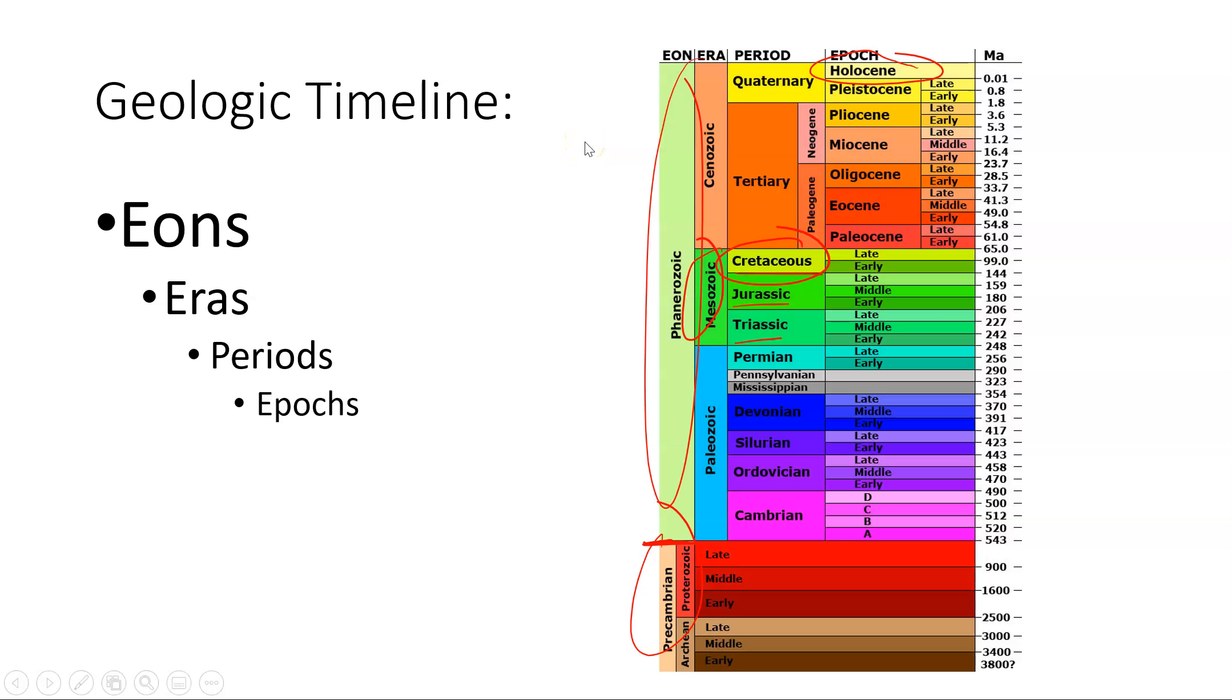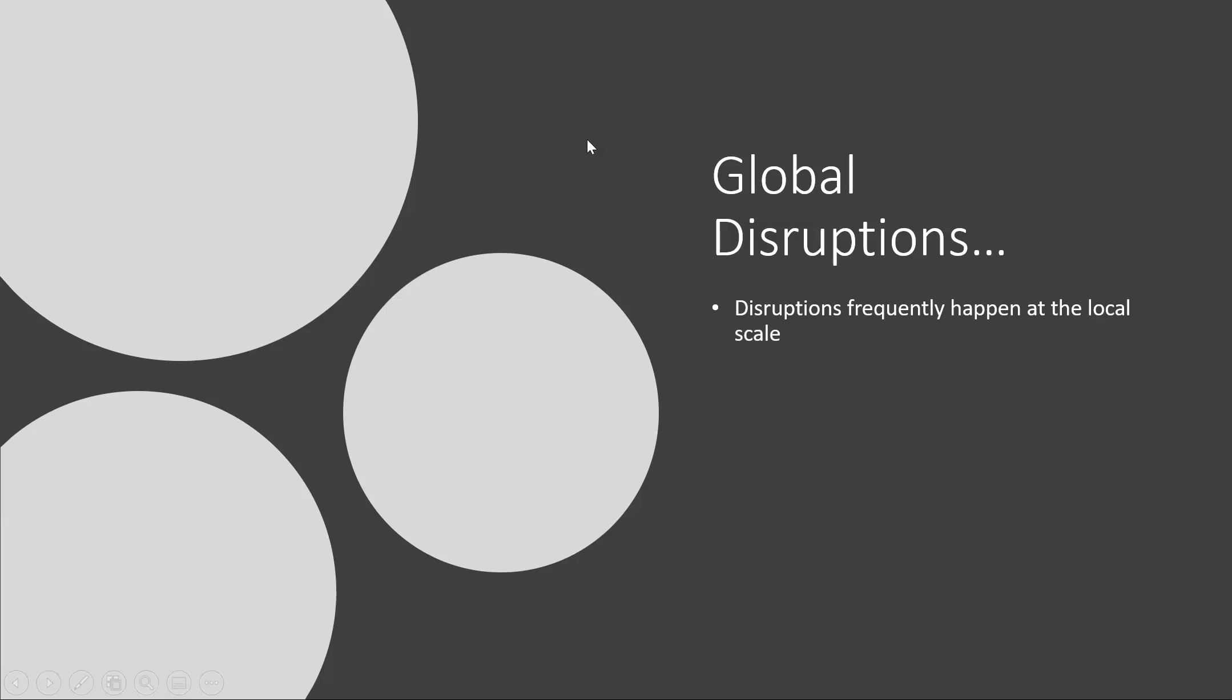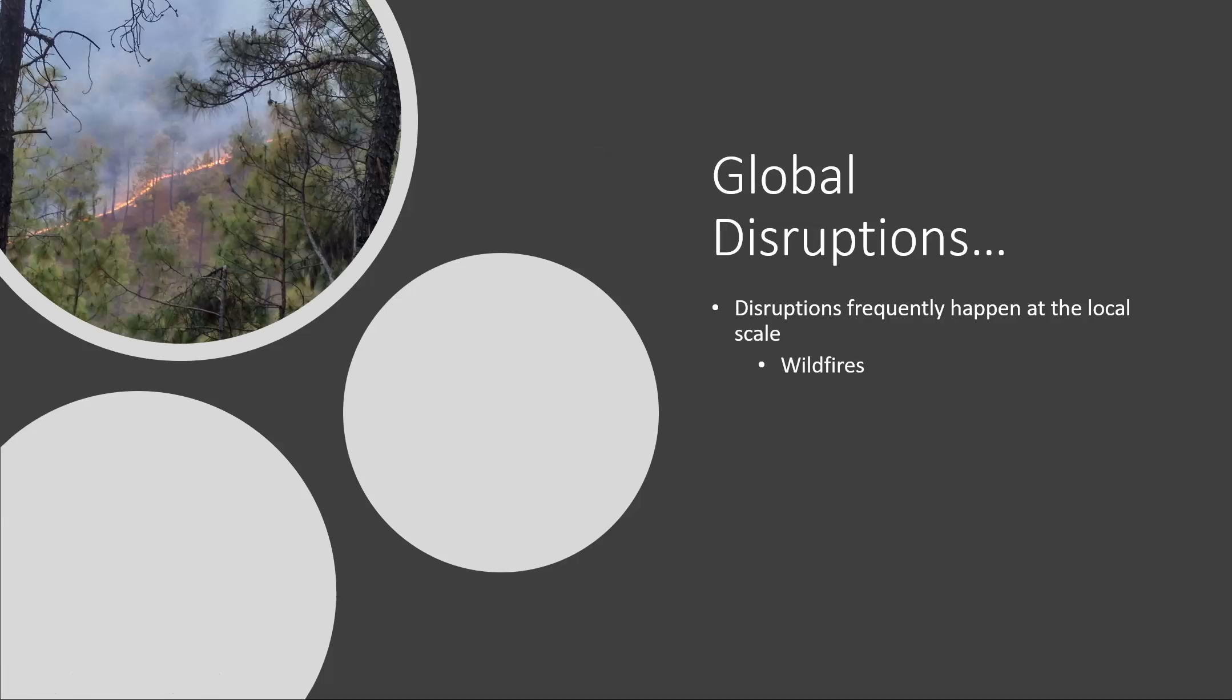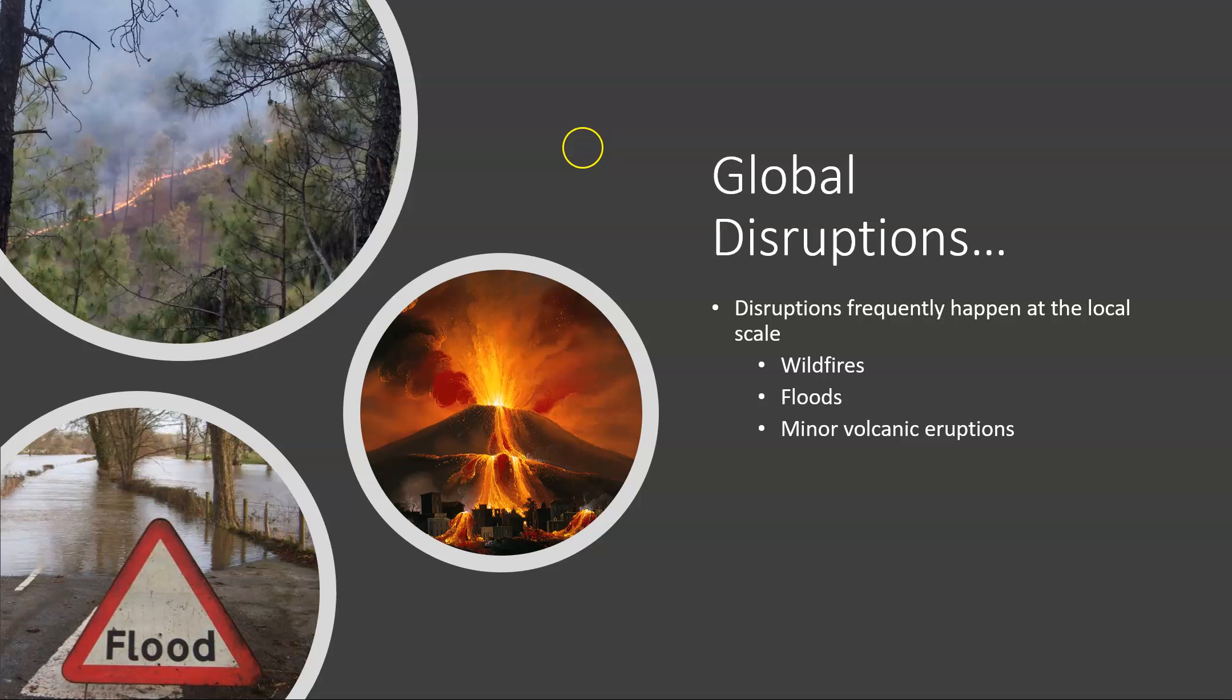Disruptions happen relatively frequently at the local level. Wildfires and floods and minor volcanic eruptions - you'll experience several of these throughout your lifetime. These happen in local areas and don't have a whole lot of noise on the global scale. Even those crazy wildfires we had just this last summer that impacted air quality so badly, on the terms of the globe as a whole it was a very localized event.